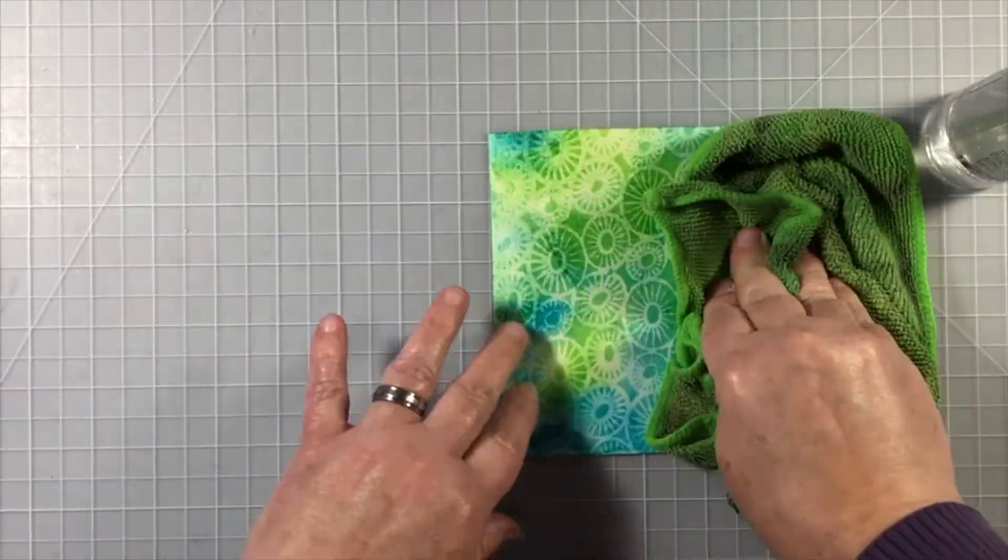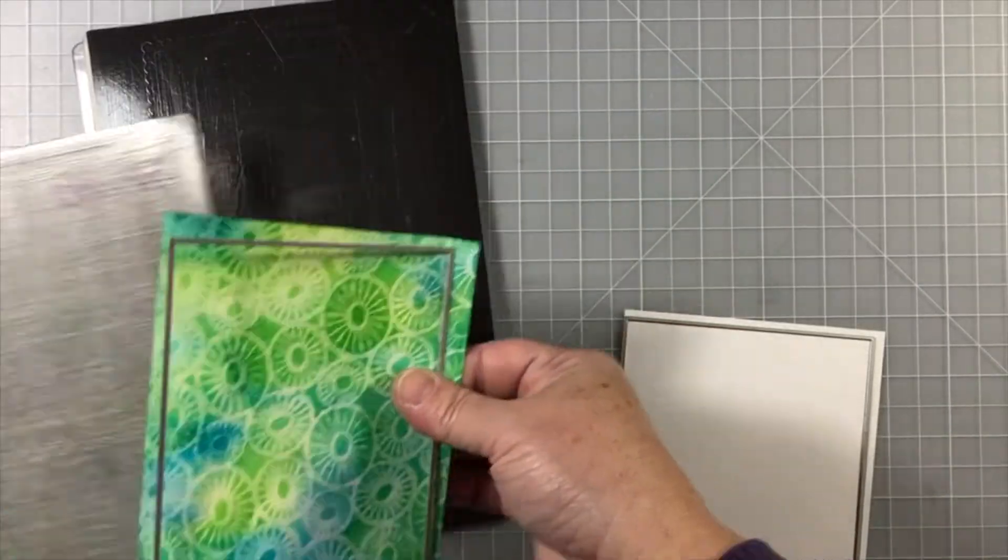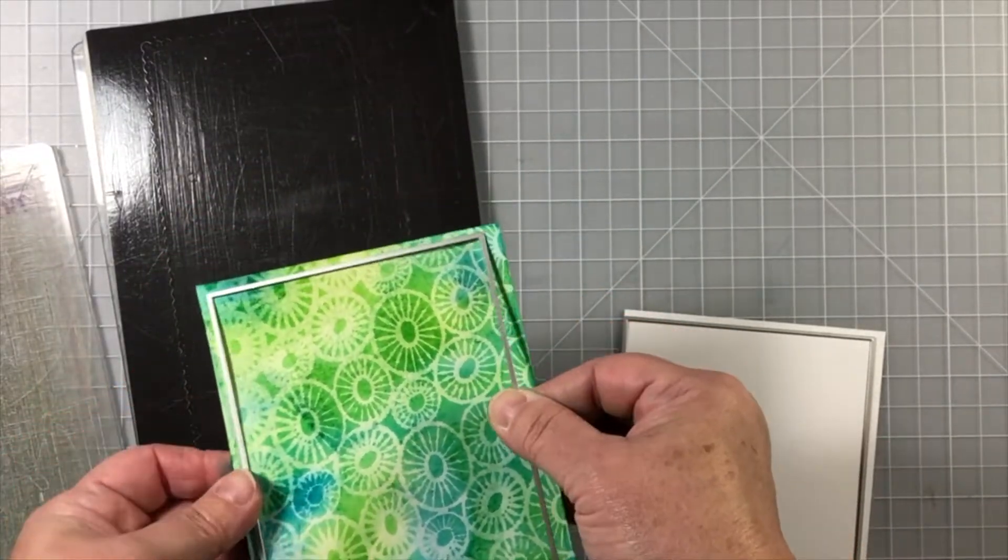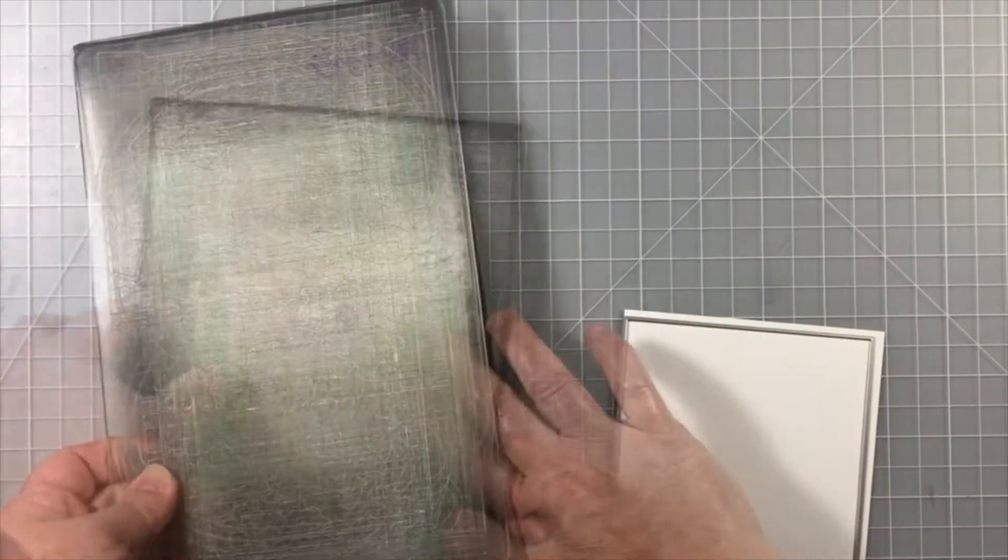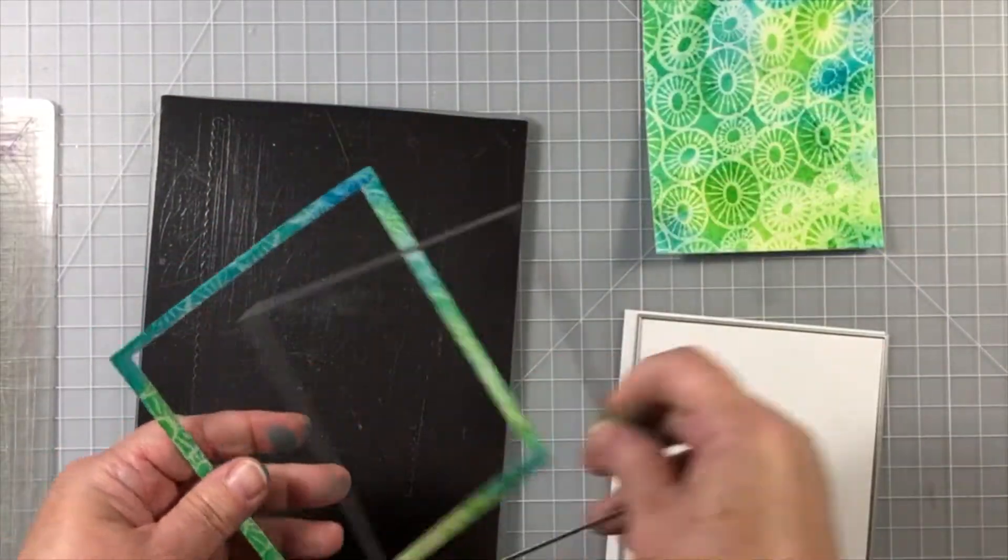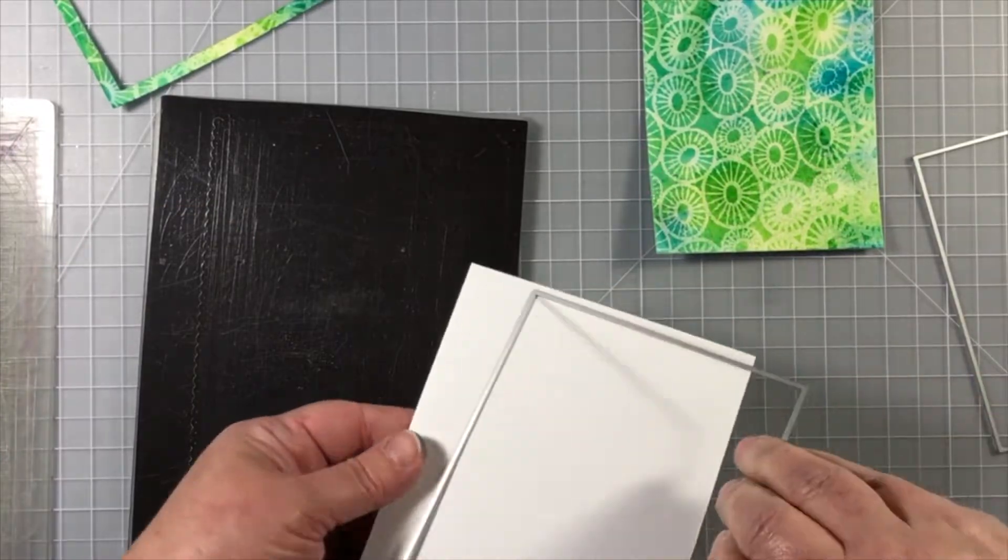There's lots of different names for this technique. Some people I think call it Joseph's coat. There's lots of different ways to do this, but I really like doing this with a stencil because I can get a really cool look.